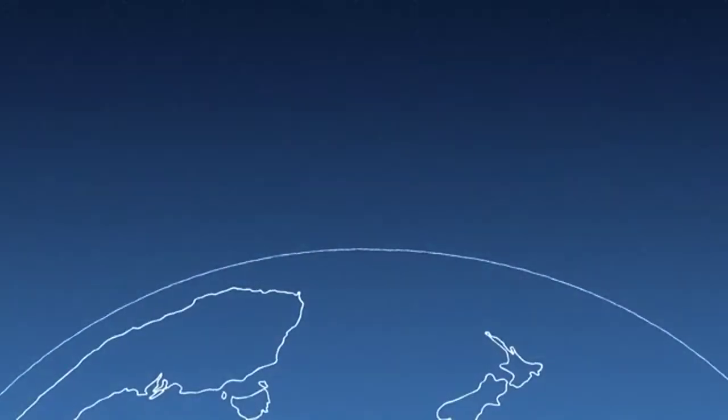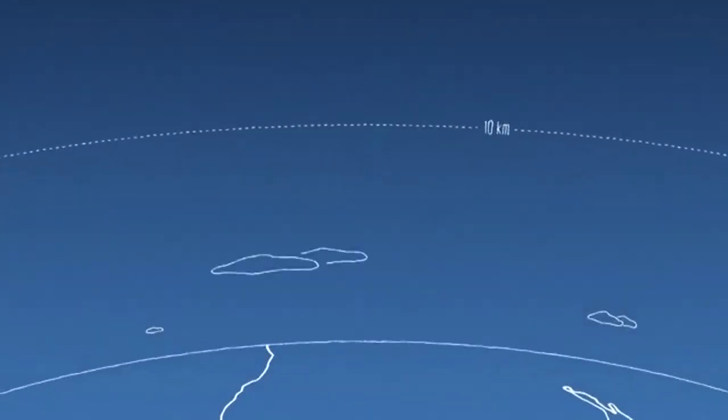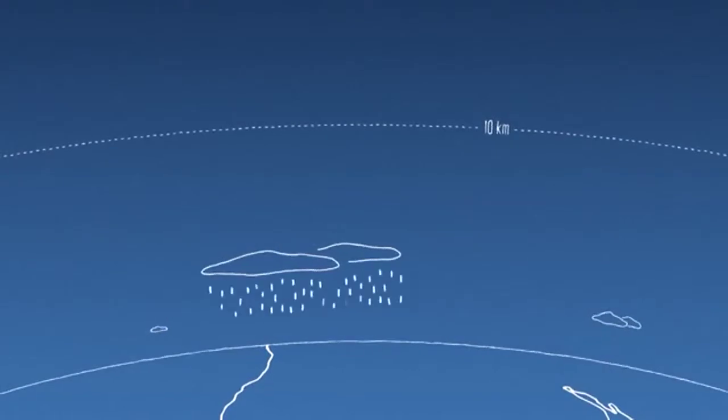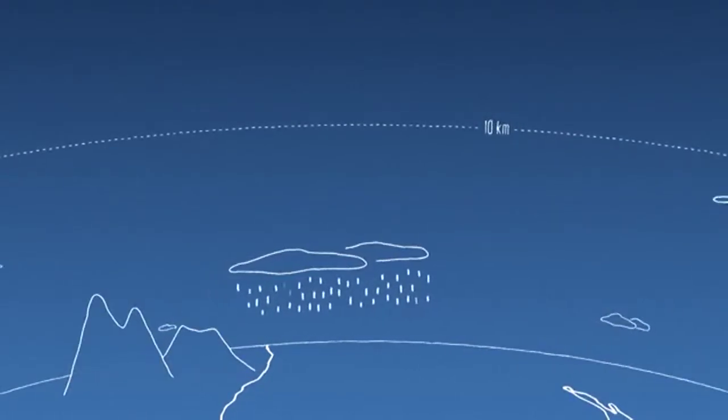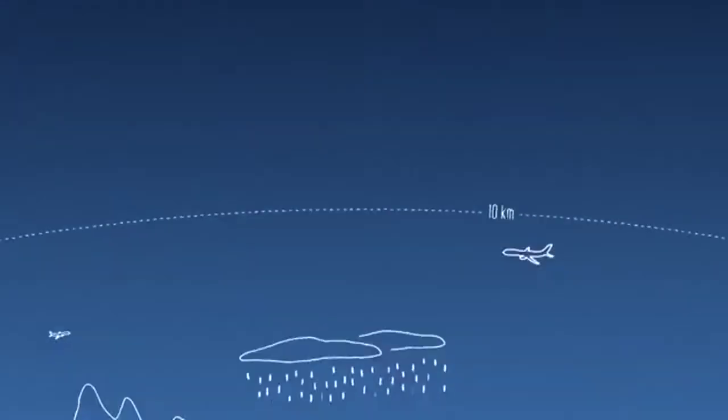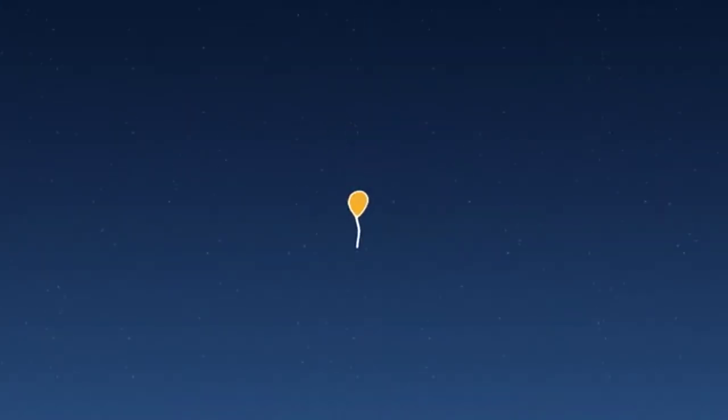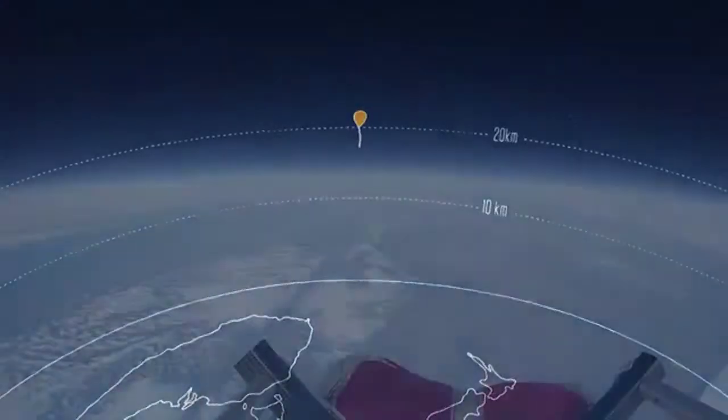So here's the surface of the planet. From here, right up to about 10 kilometers, this is where rain happens, this is where mountains are, and pretty much all aircraft fly down here. Now, here's our little balloon up here. This is right around 20 kilometers. We're actually in the stratosphere.